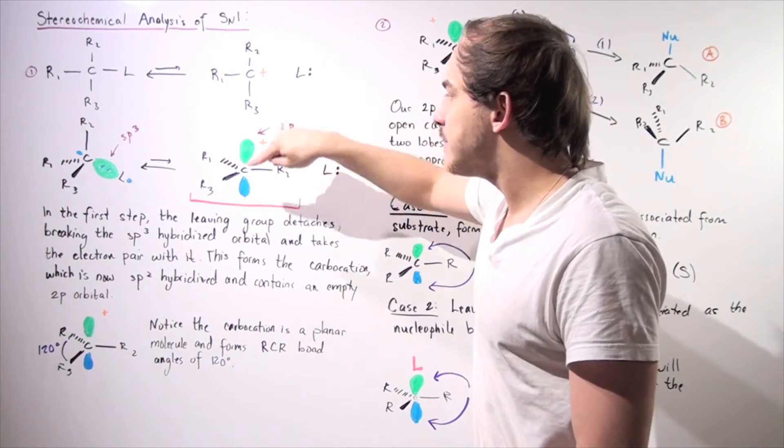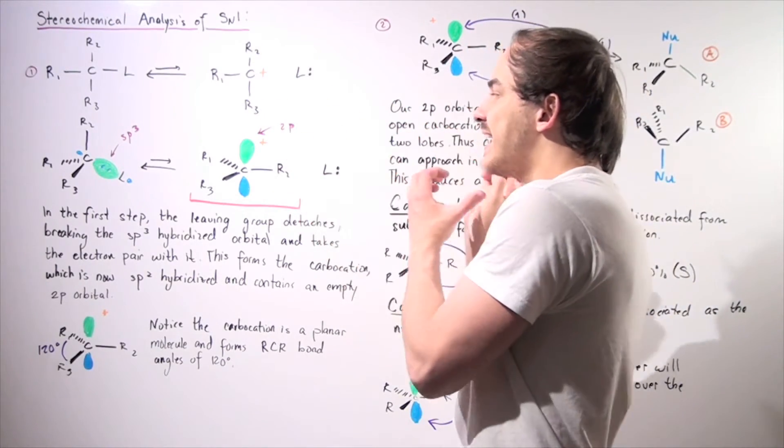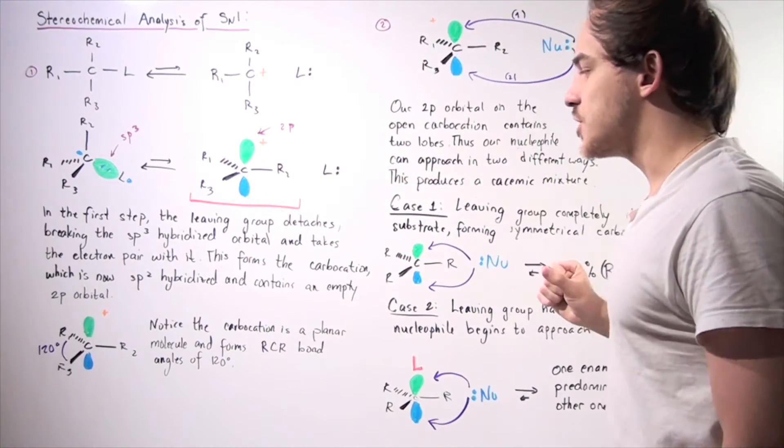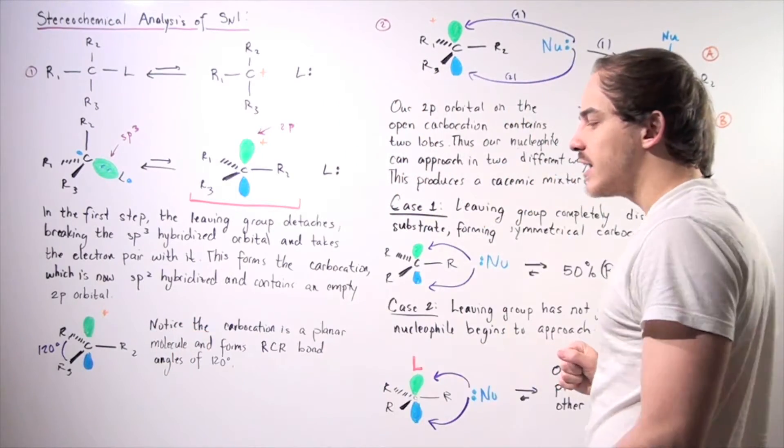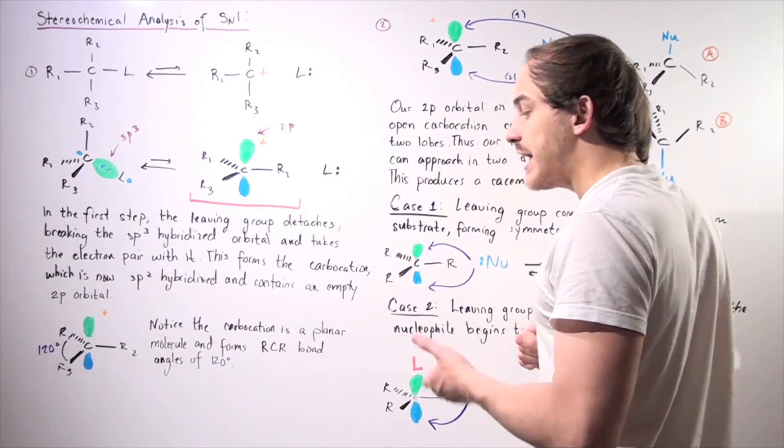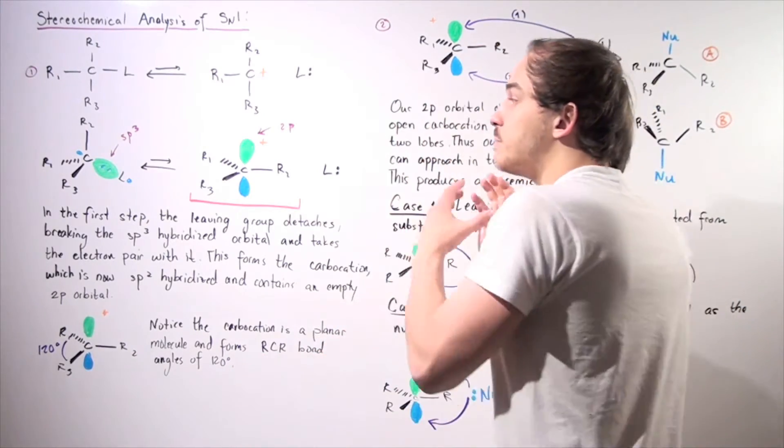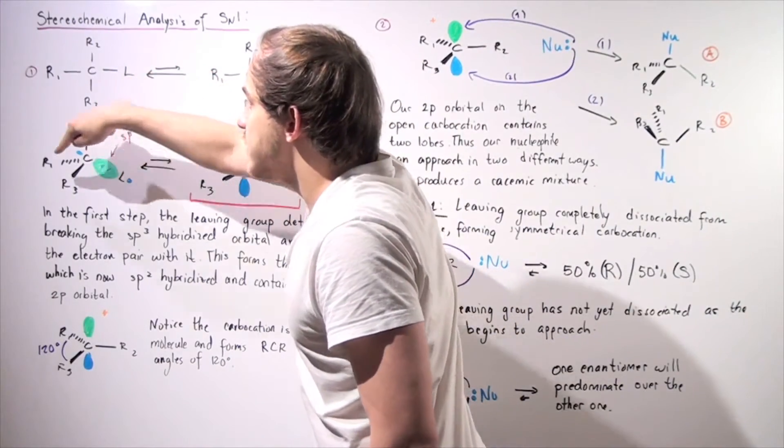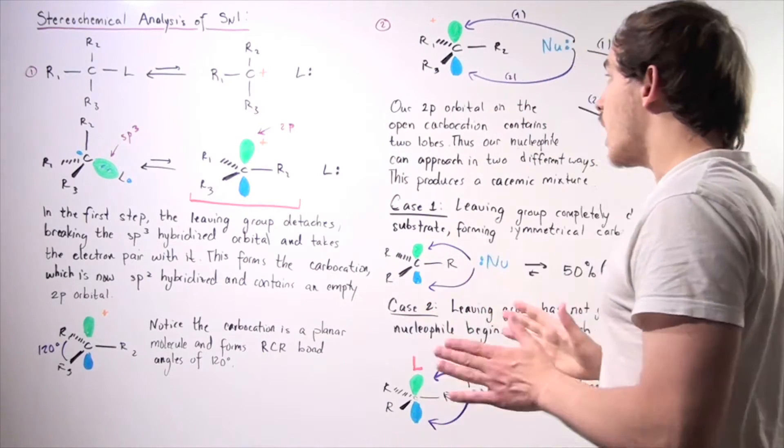So since it contains an empty 2p orbital, if a nucleophile comes around, it can attach itself to that 2p orbital, as we'll see in just a second. So once again, notice the carbocation is a planar molecule and forms RCR bond angles of 120 degrees, where before our angle between any RCR was approximately 109 degrees.